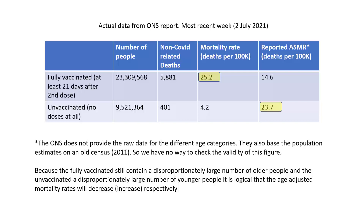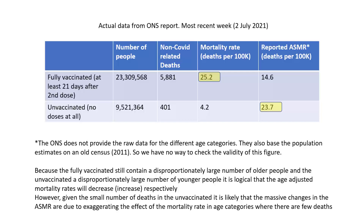However, the big problem here is that there are relatively few deaths overall in the unvaccinated, and it's likely that the massive changes in the age-standardized mortality rate are due to exaggerating the effect of the mortality rate in age categories where there are few deaths.